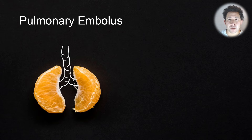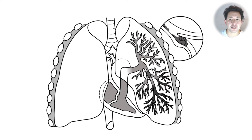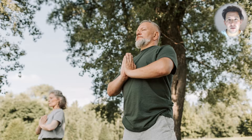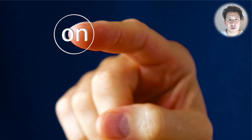A pulmonary embolus is a blood clot in one of the pulmonary arteries, which reduces blood flow from the right side of the heart to whatever area of lung that artery was supplying. This causes a sharp pain that is typically worse on inspiration and expiration, and can be worse on coughing also. It's usually a relatively rapid onset pain.